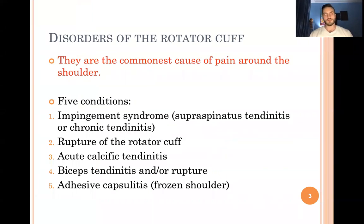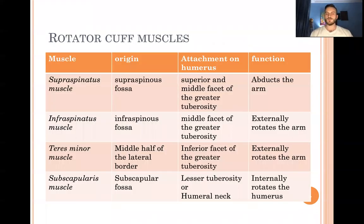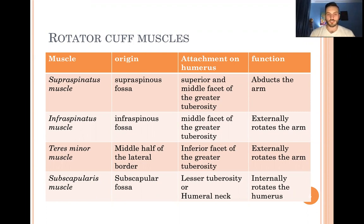The rotator cuff muscles have many causes of pain in the shoulder region. We have impingement syndrome — supraspinatus tendinitis or chronic tendinitis — rupture of the rotator cuff muscles, acute calcific tendinitis, biceps tendinitis, and adhesive capsulitis. The supraspinatus originates from the supraspinous fossa of the scapula, attaching to the superior and middle facet of the greater tuberosity of the proximal humerus, and its function is abduction.